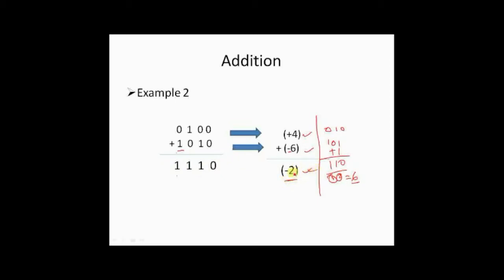So when you add here, it is 0 plus 0 is 0, 0 plus 1 is 1, 1 plus 0 is 1, 0 plus 1 is 1. So we got 1110. So this 1 indicates a negative sign. So you need to take a 2's complement of the remaining bit, that is 110. And it will be 2's complement 001 plus 1, that is 010. So that is equal to minus 2.